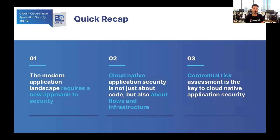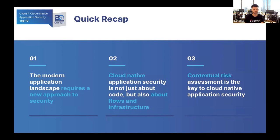We have just finished going through all the Cloud Native Application Security Top 10 Risks. We talked about how applications have changed and as a result the risks have changed as well, requiring a new approach to security — which is why we are building the OWASP Cloud Native Application Security Top 10 Risks flagship project. We talked about how modern security issues involve a combination of multiple components, and to understand the actual risk, you must look at them all together and see how they are connected. When discussing application security in cloud native applications, the environmental context is the key and cannot be ignored.